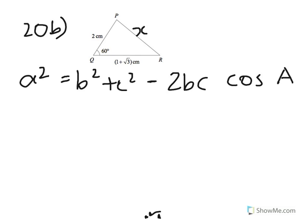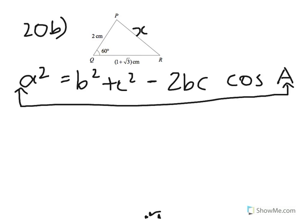In 20B, you're asked to find X, which we call PR, and give the answer in surd form — that's 1+√3, written as a root rather than a decimal. To solve this, you need the cosine rule: A² equals B² plus C² minus 2BC cosine A, where angle A is opposite to side A. The angle we have is 60°, and the two sides are (1+√3) and 2. We need to find A squared, which is X squared.